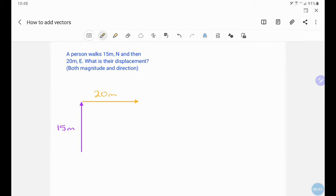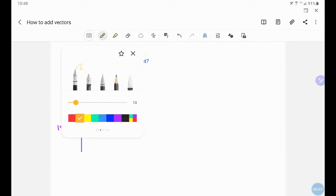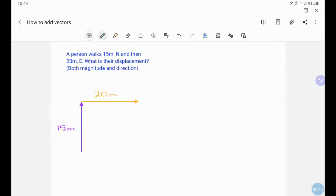We are looking for their displacement. Displacement is always from where you start to where you end. So it will be drawn from where I start to where I end like so. And that is what we're looking for. This value here will be the magnitude. The direction will be given by the angle.